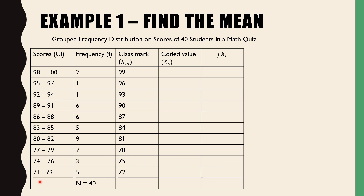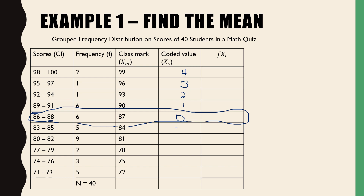We'll choose the 6th row as our assumed mean placement. We place the coded values here: starting from 0, going upward: 1, 2, 3, 4 — these are positive. Going downward from 0: negative 1, negative 2, negative 3, negative 4, negative 5.